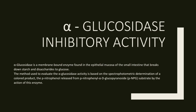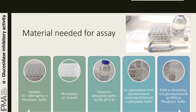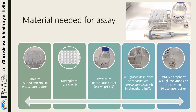For the glucosidase inhibitor activity assay, the materials needed are: samples dissolved in potassium phosphate buffer, microplates with 12 by 8 wells, potassium phosphate buffer 0.1 molar at pH 6.9, alpha-glucosidase from Saccharomyces cerevisiae at 0.5 units per milliliter in potassium phosphate buffer, and paranitrophenol alpha-D-glucopyranoside at 5 millimolar in potassium phosphate buffer.